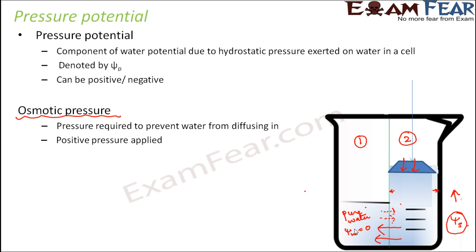Pressure potential is a positive pressure which increases the water potential. Due to the addition of solute, the water potential was reduced to ψS, a negative potential. But by application of this pressure potential, the water potential increases again — it might convert the negative value into a positive value, or the magnitude will at least decrease. For example, if it was minus 600, now it might be minus 6. That is why pressure potential can be negative but it still increases the value of water potential.